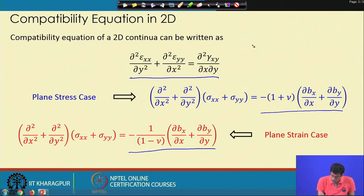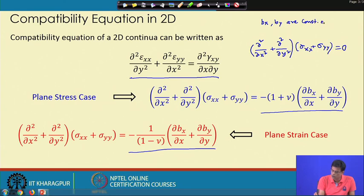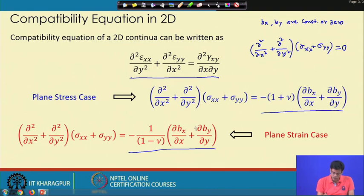When bx and by are constant or zero, the compatibility condition simplifies to: (∂²/∂x² + ∂²/∂y²)(σxx + σyy) = 0, because the first derivative of a constant is zero, making those terms vanish.